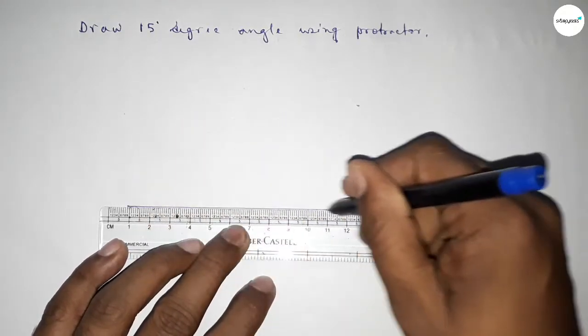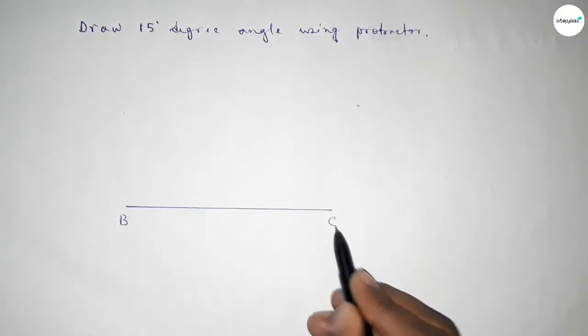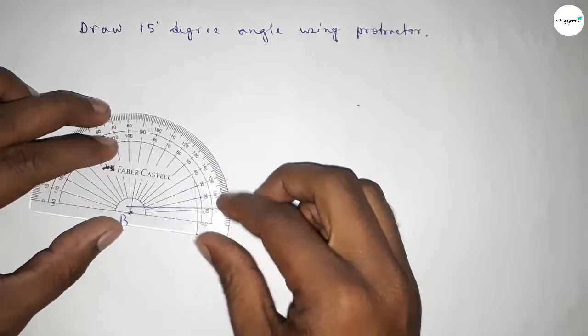Line of any length, taking here point B and here C. Now putting the protractor on point B.